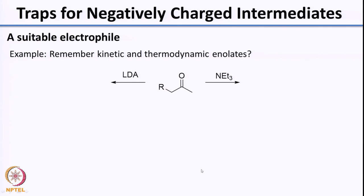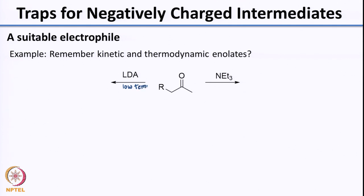With this idea in mind, I had asked you to think about this example. When you think of trapping negatively charged intermediates, obviously positive charge likes negative charge. So if you are looking at trapping a negatively charged intermediate such as a carbanion or an enolate, you would look at an electrophilic species to trap it. Shown on your screen are 2 bases that can be used to deprotonate the given ketone. If you remember what you had studied about kinetic and thermodynamic enolates — in which case do you get the kinetic enolate? I had asked you to look at the situation where you use a low temperature.